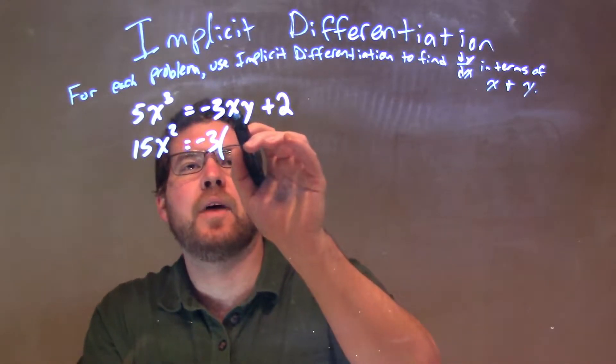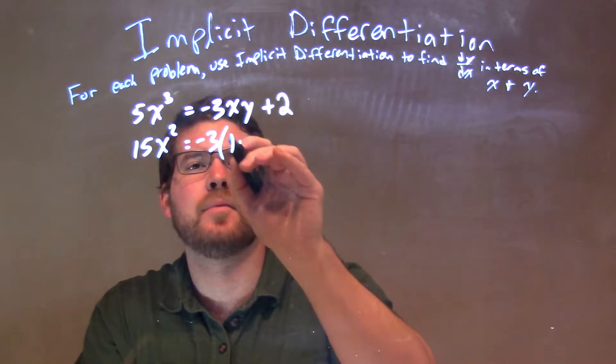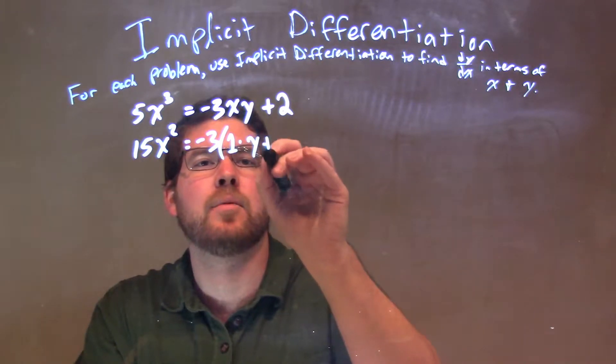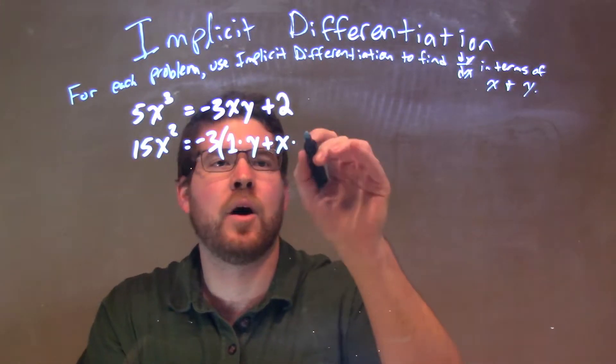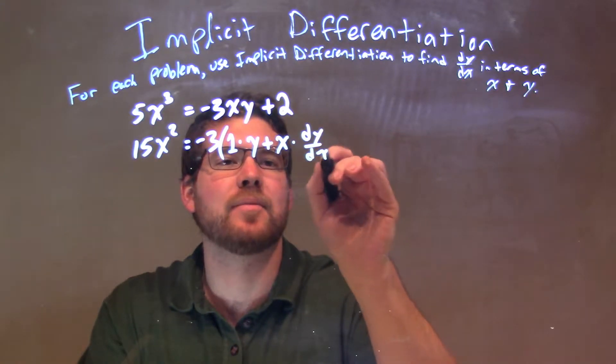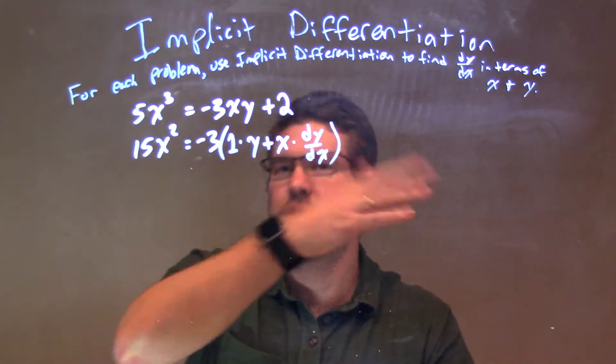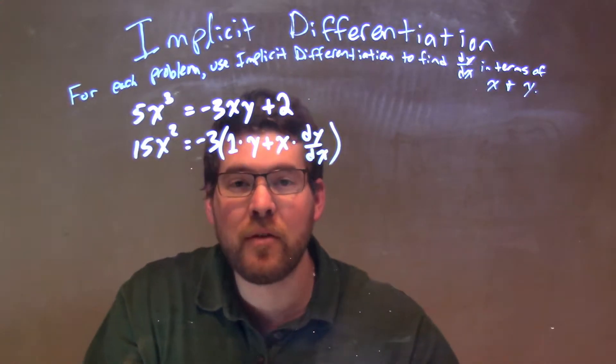So, I have derivative of x, which is 1 times y, plus x times the derivative of y, which is dy/dx. Now, luckily, we have just 2 on the outside, and the derivative of that is 0.